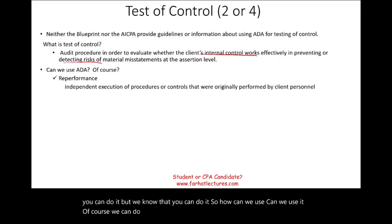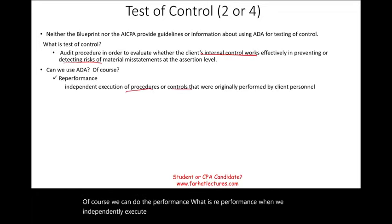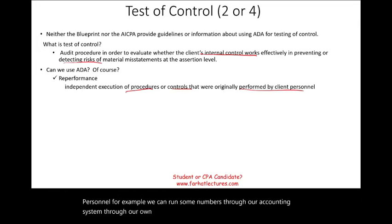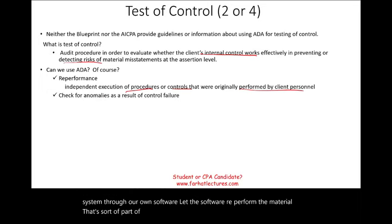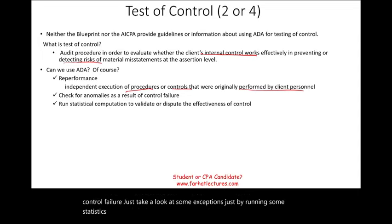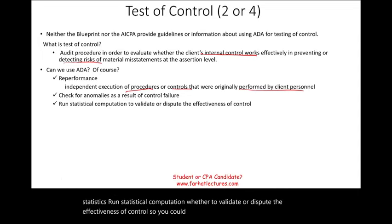So how can we use ADA in test of control? We can do re-performance — independently executing the procedures or controls that were originally performed by the client personnel. For example, we can run numbers through our own software and let it re-perform the calculations. This is part of ADA. We can also check for anomalies resulting from control failure, looking at exceptions by running statistics.